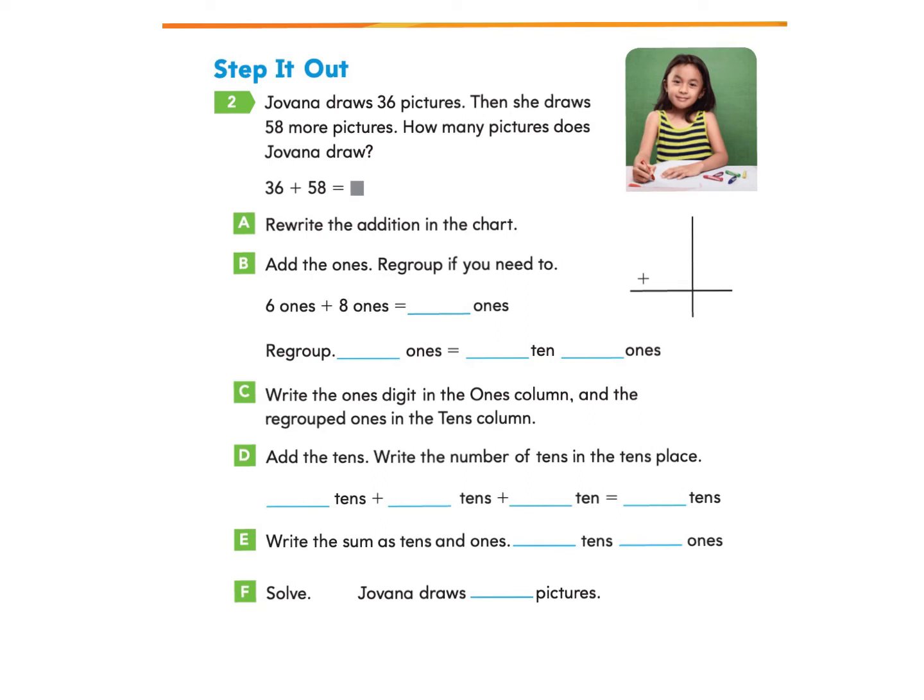Let's take a look at the next page under Step It Out. We are going to read this problem. Jovanna draws 36 pictures. Then she draws 58 more pictures. How many pictures does Jovanna draw? And then there's this great addition problem underneath. It says 36, which is what she drew first, and then she added 58 more pictures. So now we're trying to figure out how many pictures does that mean that she drew, like what's the total?